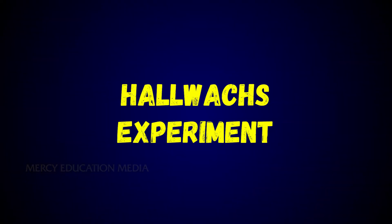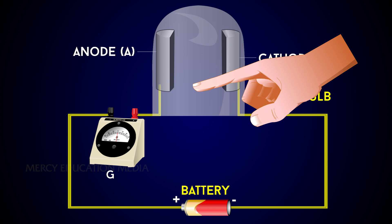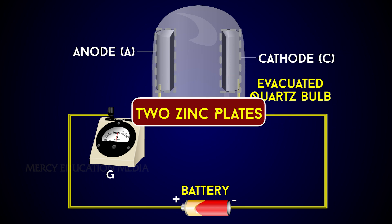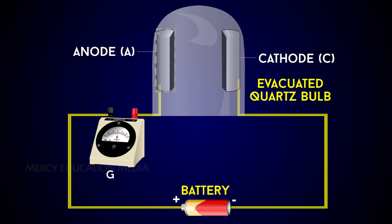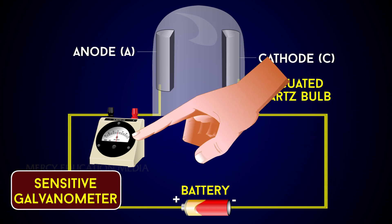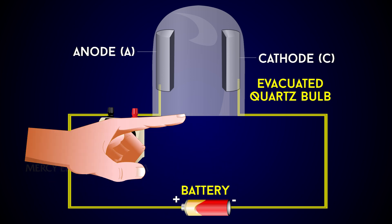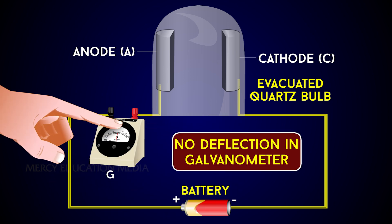What is Hallwach's experiment? It consists of an evacuated quartz bulb with two zinc plates, cathode C and anode A. The plates are connected to a battery and a sensitive galvanometer. In the absence of any radiation incident on the plates, there is no flow of current and hence there is no deflection in the galvanometer.